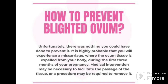Unfortunately, there is nothing that you could have done to prevent blighted ovum. It is highly probable that you will experience a miscarriage when the ovum tissue is expelled from your body. During the first three months of pregnancy, medical interventions may be necessary to facilitate the passage of tissue, or a procedure may be required to remove it.